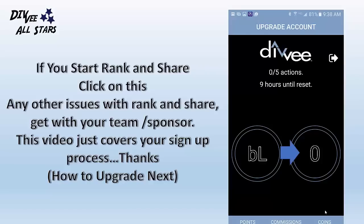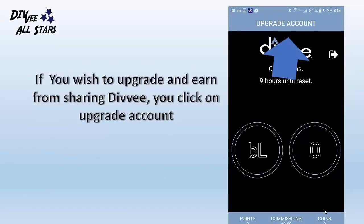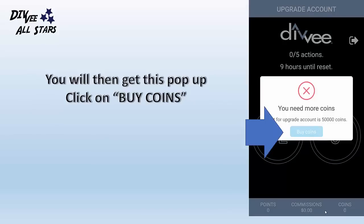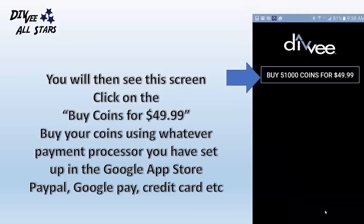Now if you wish to upgrade and become a paid affiliate, simply click on the bar from the login screen with the two options. At the top you will see 'Upgrade Account.' Click on 'Upgrade Account.' You will then get a pop up and you will need to click on 'Buy Coins.' You will then see a screen that says buy 51,000 coins for $49.95. Click on 'Buy Coins for $49.95.' You will then be taken to a payment processor within the Google Play Store and you will need to pay using whatever payment processor you have set up, whether it is PayPal, Google Pay, or credit card.